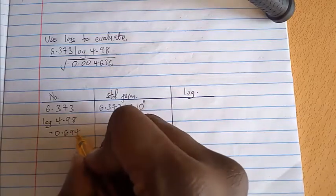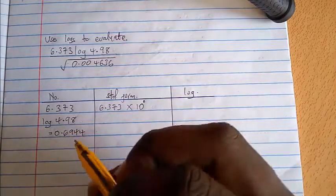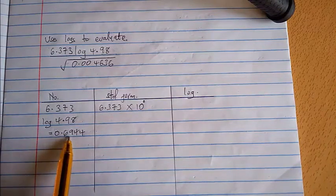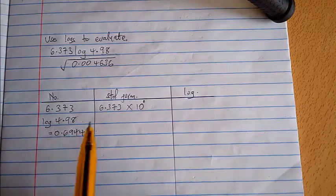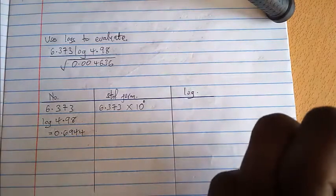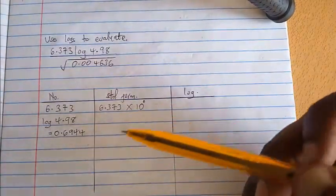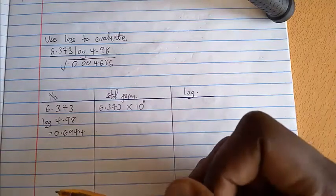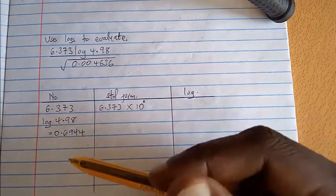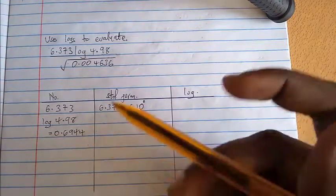Now if you don't know where I got this 0.6944, I want to revisit the form one, I want to revisit the subtopic on how to find the logarithm of numbers using a four-figure mathematical table.